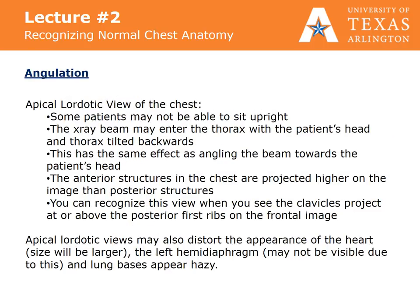The apical lordotic view of the chest may be used for patients who may not be able to sit upright. The x-ray beam may enter the thorax with the patient's head and thorax tilted backwards, which has the same effect as angling the beam towards the patient's head. The anterior structures in the chest are projected higher on the image than the posterior structures. You can recognize this view when you see the clavicles project at or above the posterior first ribs on the frontal image. The apical lordotic view may also distort the appearance of the heart — size will be larger — and the left hemidiaphragm may not be visible, and lung bases appear hazy. Normally, x-ray beams pass horizontally or parallel to the floor in an upright chest study, with the plane of the thorax perpendicular to the x-ray beam.